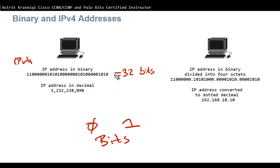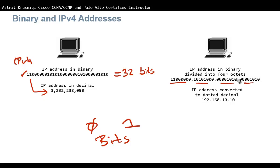We need to learn how to convert binary into decimal — not the whole 32-bit number. If you put it in a calculator, a real IPv4 address in 32 bits would convert to something like 3 billion 232 million. Instead, the IPv4 address is divided into four octets, each with eight bits — that's a byte. So each octet converts to a value from 0 up to 255 maximum.